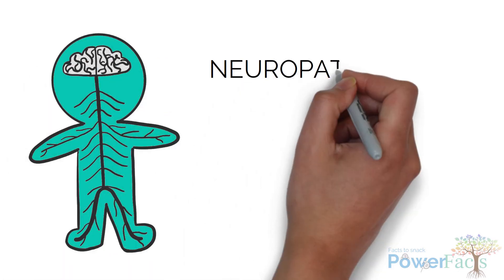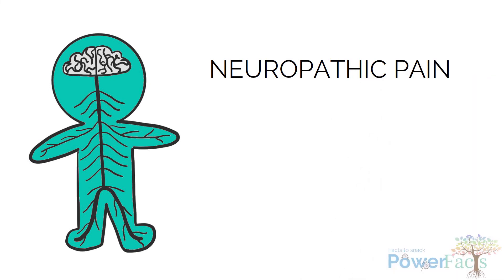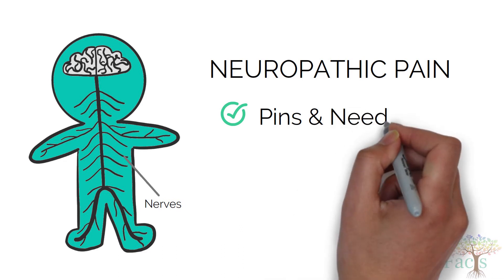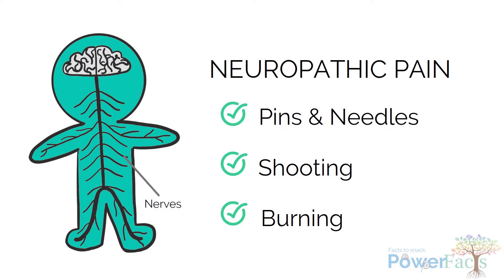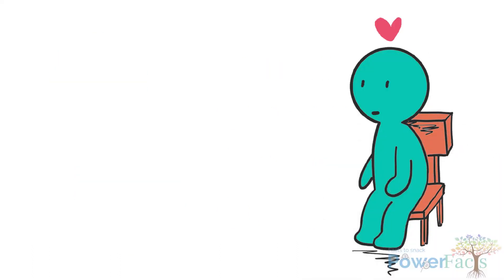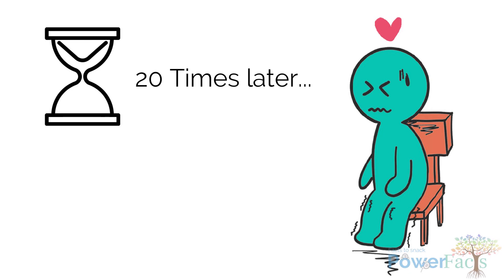Thirdly, there is neuropathic pain which happens when nerves are injured. Common descriptions include feeling like pins and needles, shooting pain and burning pain. Sit in the same position and watch this video for another 20 times without moving and you will feel neuropathic pain creeping up your legs.